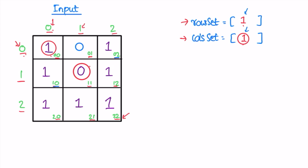Element (1,0) — row one is in row set, so we change that element to zero. Element (1,1) — row one is in row set, so we change it. Element (1,2) — row one is present, so we change that element too. Moving to row two: (2,0) — two is not in row set and zero is not in column set, so we move on. (2,1) — two is not in row set but one is in column set, so we change that element to zero.